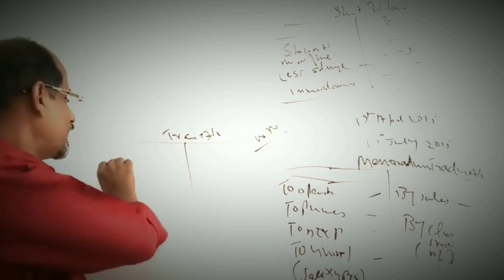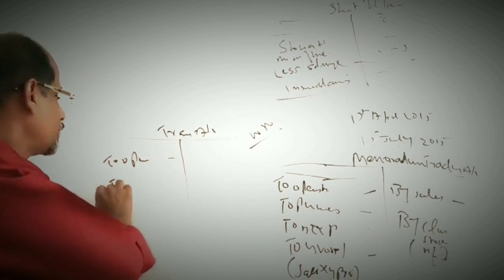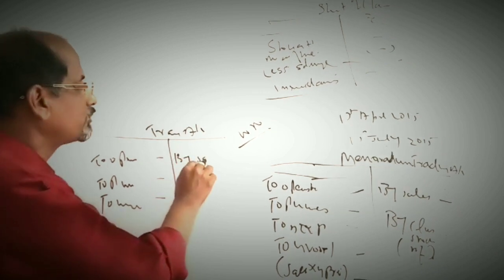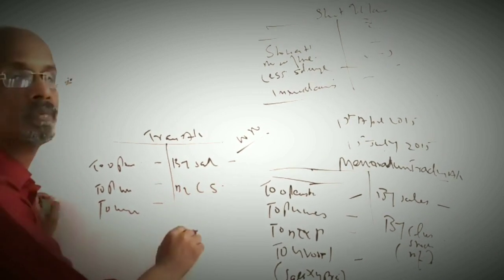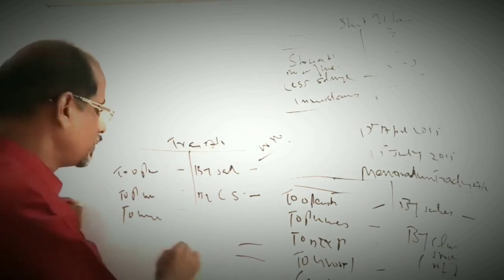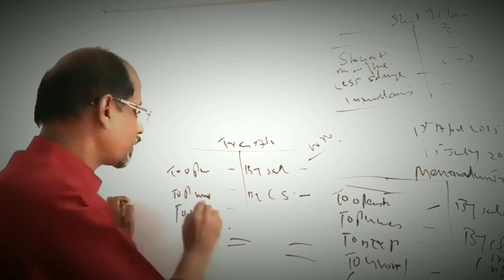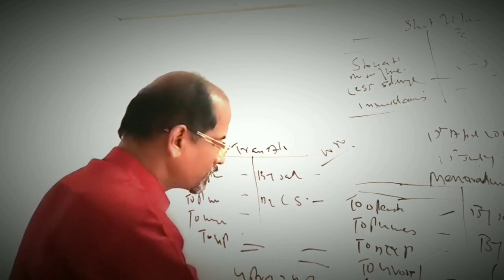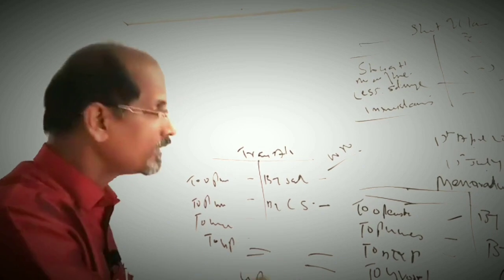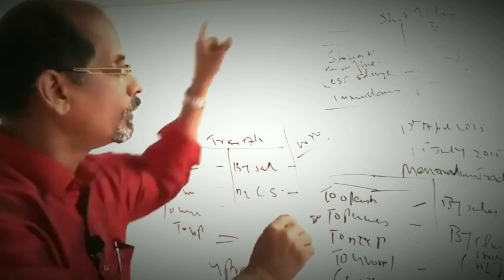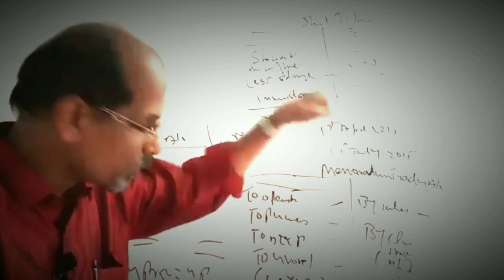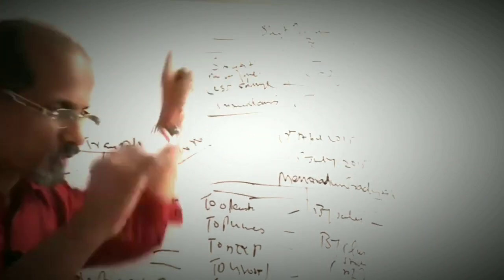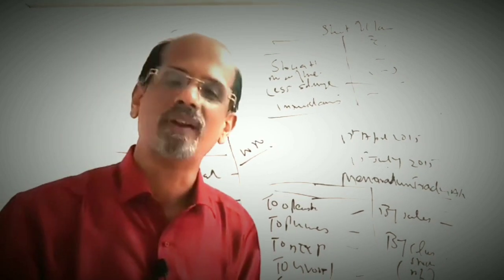In the previous year's trading account, you put the opening stock, purchases, direct expenses, sales, and closing stock of the previous year to get the gross profit. Then the GP ratio equals gross profit divided by sales, multiplied by 100. After preparing this trading account, you will prepare the memorandum trading account, and using this GP ratio, you will find the closing stock at the date of fire, then prepare the statement of claim.